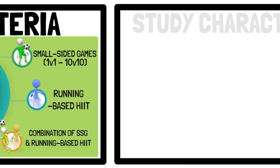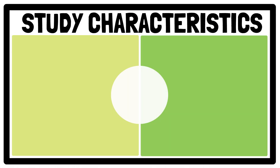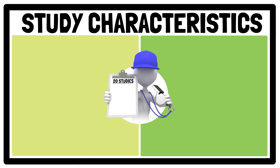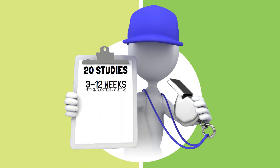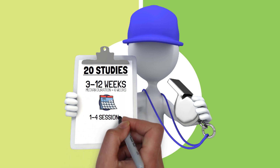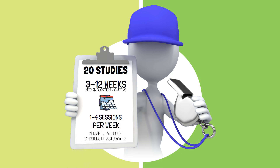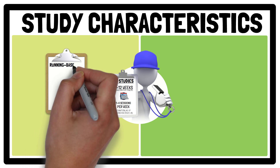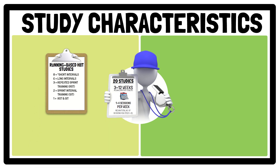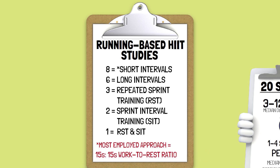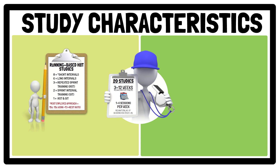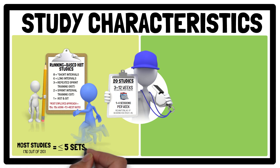In the end, 20 studies met the criteria and were included in the analysis. Across the 20 studies, interventions ranged between 3 to 12 weeks, with weekly frequency ranging from 1 to 4 sessions per week. For the studies using running-based HIIT, short intervals were the most common, typically involving 15 seconds on and 15 seconds off. The number of sets varied from 1 to 10, however most studies involved 5 or fewer sets per session.